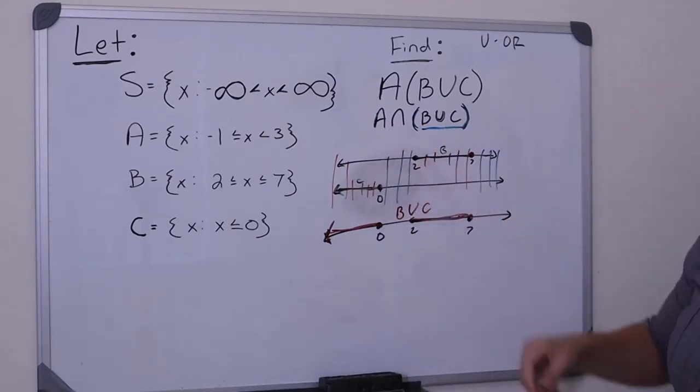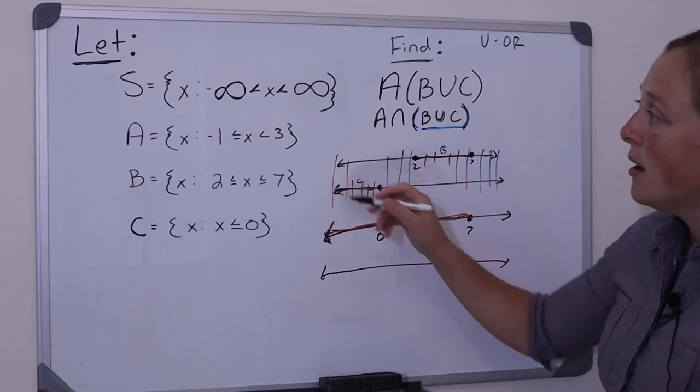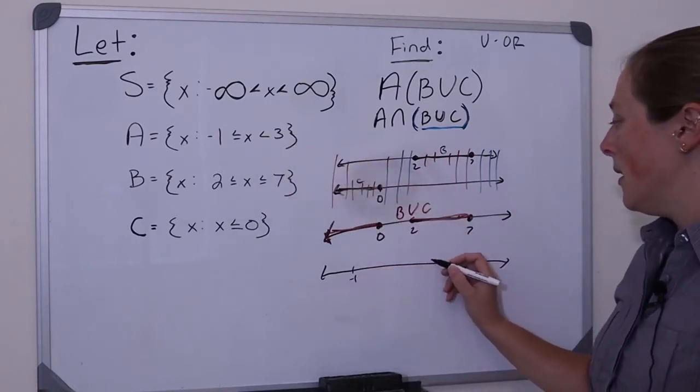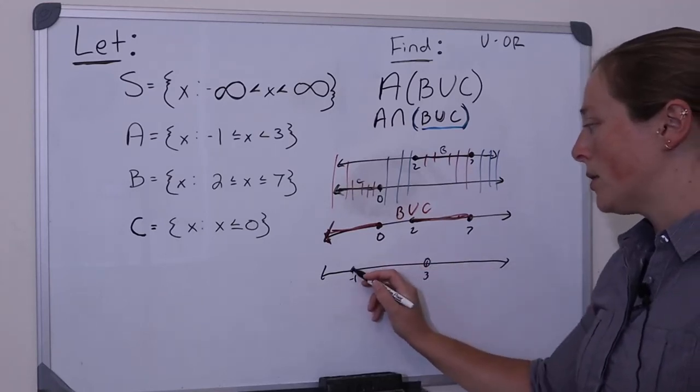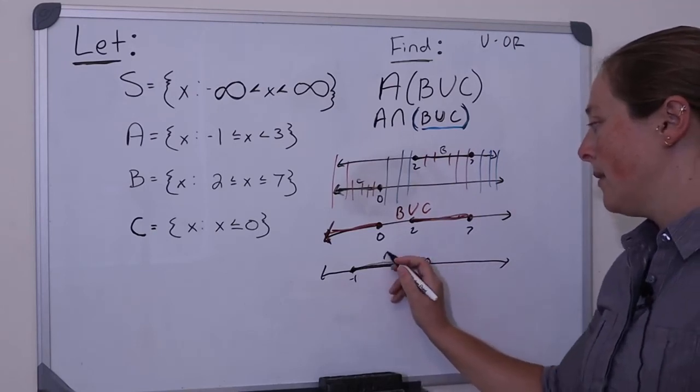Alright, now I want to find the intersection of A with B union C. So let's draw out where is A. A goes from negative 1, so negative 1 would be down here, until it gets to 3. Open circle at 3, closed circle at negative 1, and here's A.